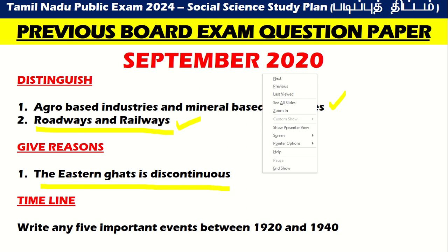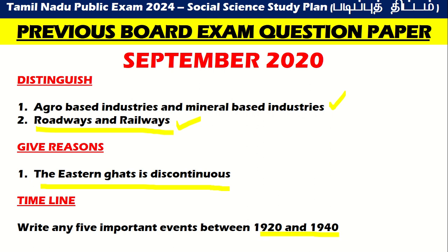Give reasons: the Eastern Ghats are discontinuous. Next, on the timeline: write any 5 important events between 1920 and 1940. You will learn the events between 1920 and 1940. Topics covered: agro-based industries and mineral-based industries, roadways and railways, Eastern Ghats are discontinuous, and 5 important events between 1920 and 1940.